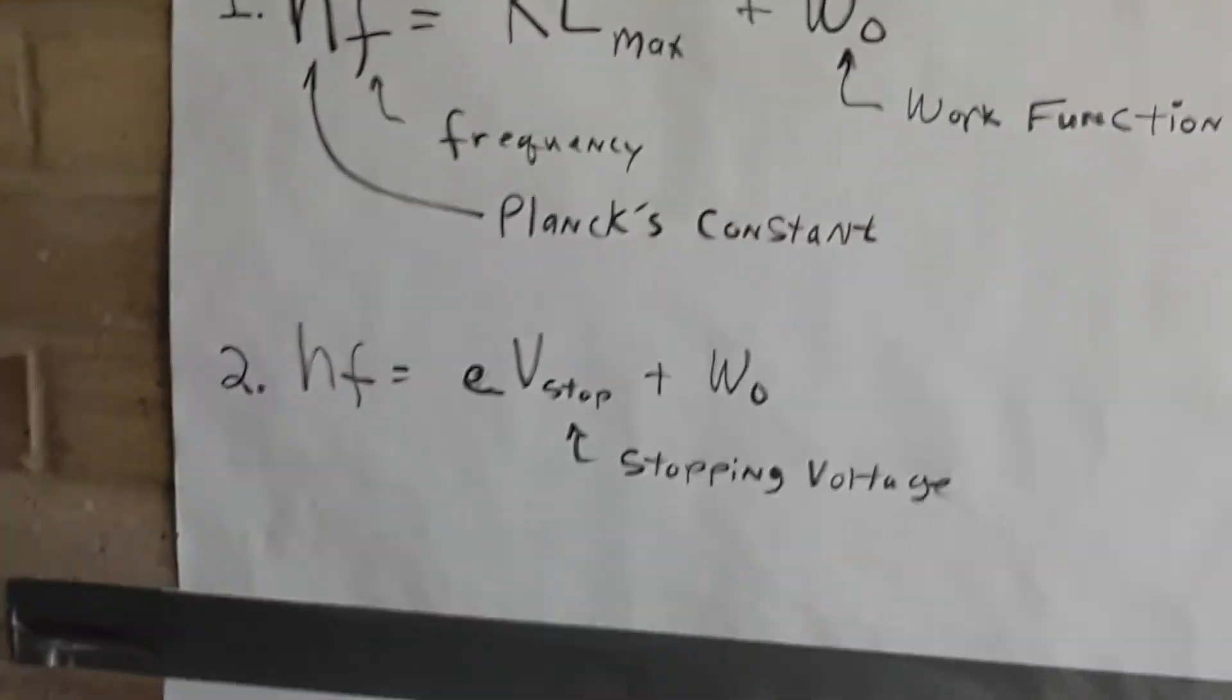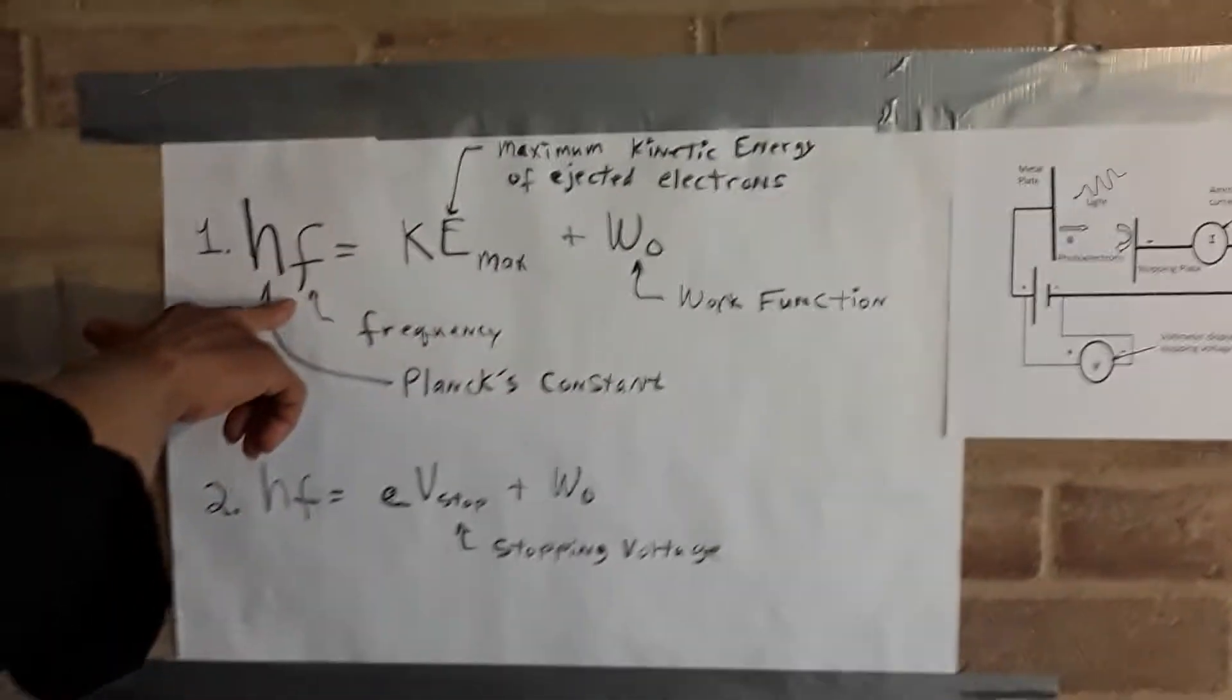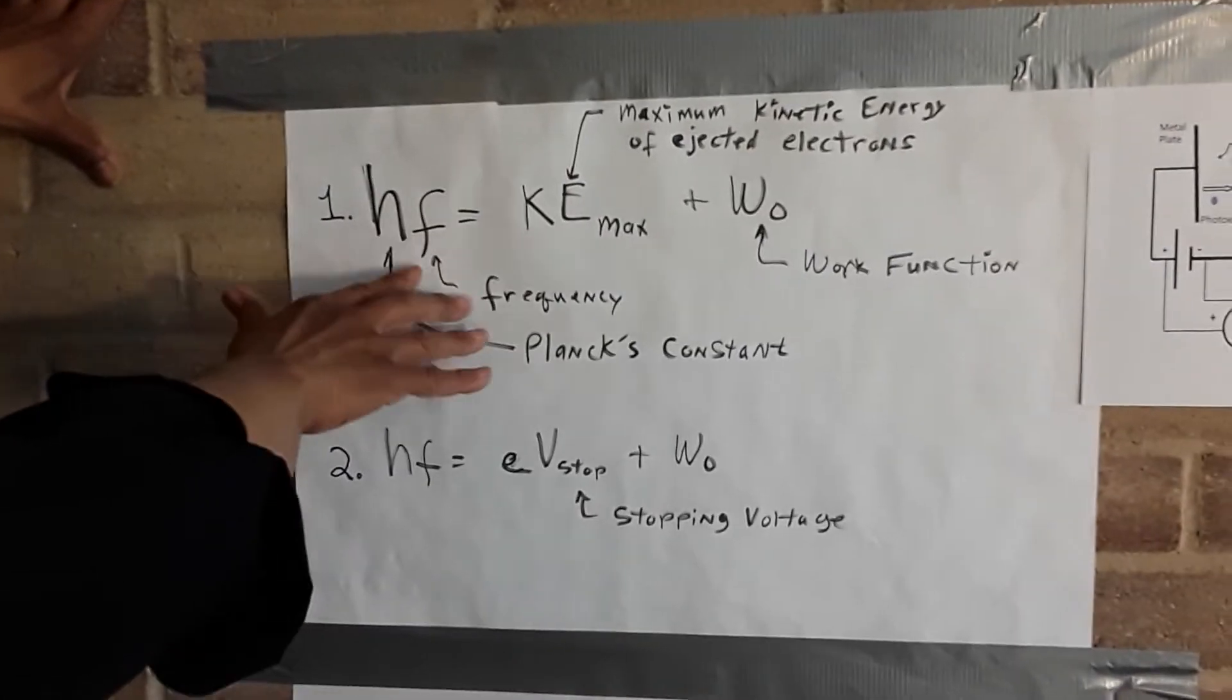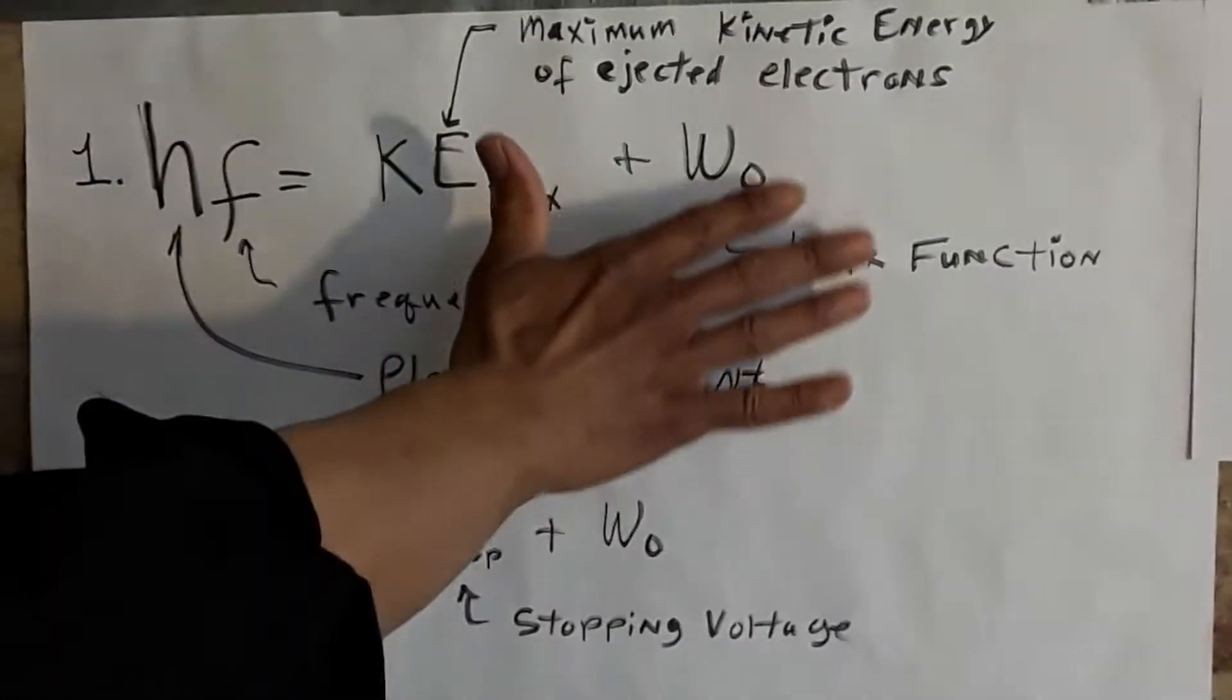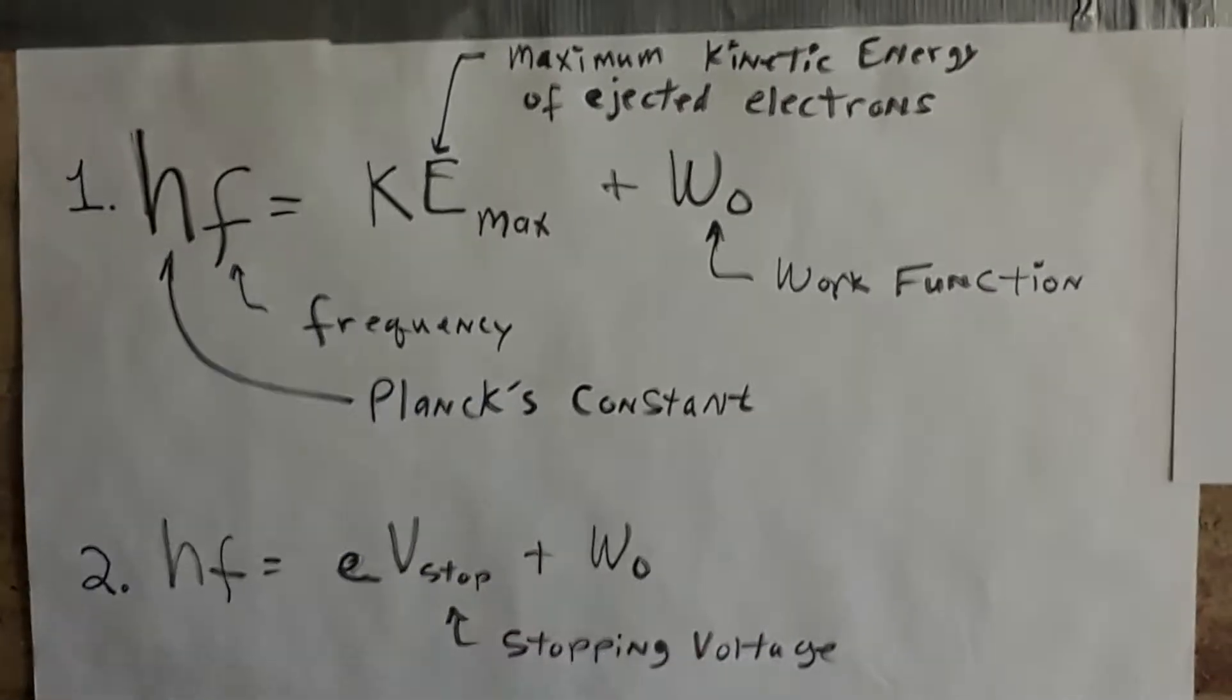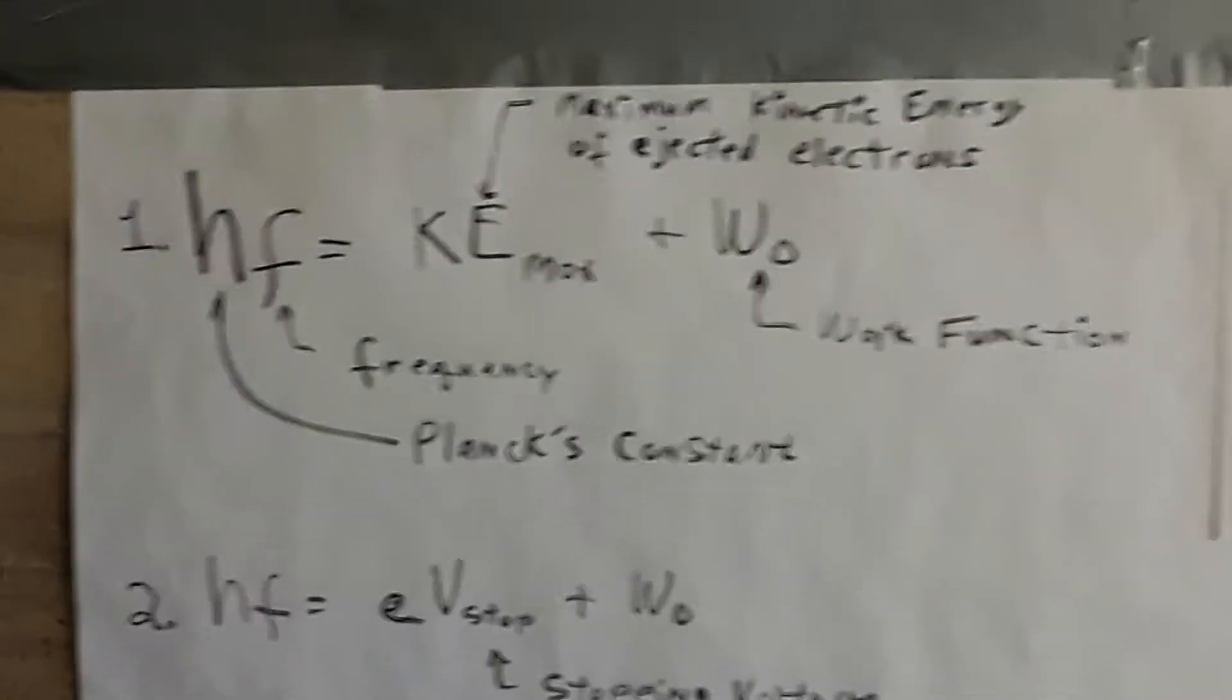If we look at the equation that we're using here, this Einstein equation, it tells us that one photon with a frequency f, and h is Planck's constant, will give the energy to one electron. Now that energy will be divided into two parts. Part of the energy will go into breaking that electron away from the bond holding it to the surface. The rest of the energy will go into its kinetic energy of motion. This is the part here, KEmax.